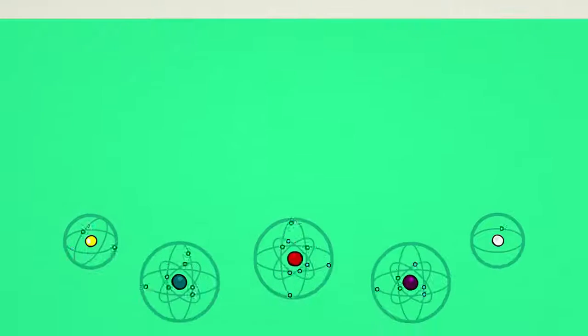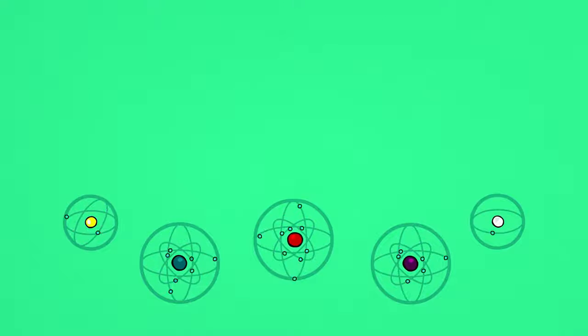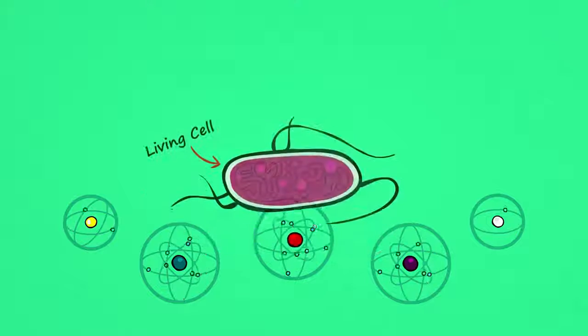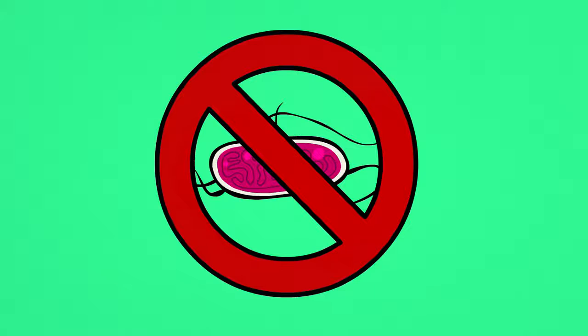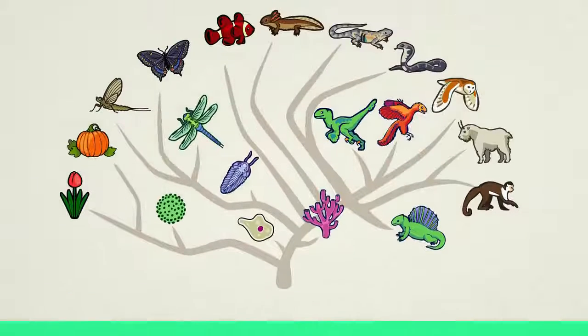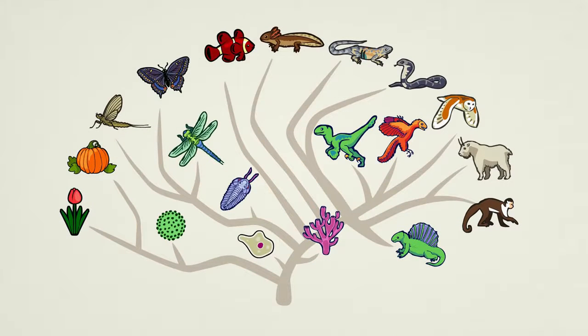Given this information, serious thinkers began to wonder, is it possible that simple life forms actually could come from non-living matter, not by poofing into existence, but through a natural gradual process similar to what we see in biological evolution?